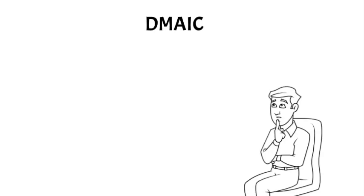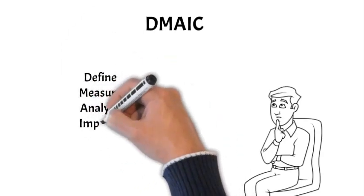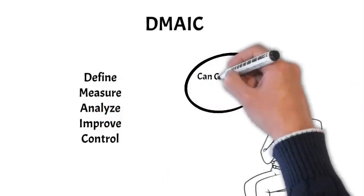DMAIC is an acronym used in Lean Six Sigma to guide a project from beginning to end. It defines the steps that professionals follow when engaged in a Lean Six Sigma project. They include define, measure, analyze, improve, and control.